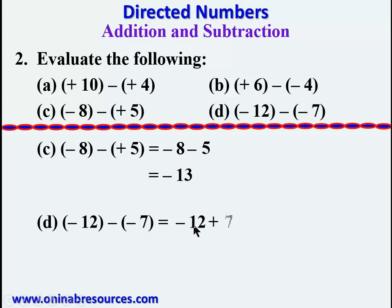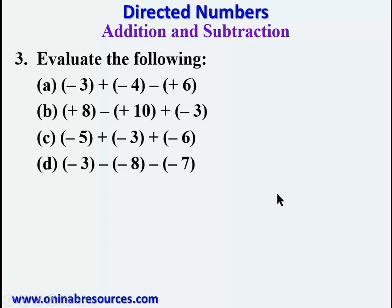We have negative 12 plus 7, which means we are taking a larger number from a smaller number, so we get negative 5. So negative 12 plus 7 gives negative 5.